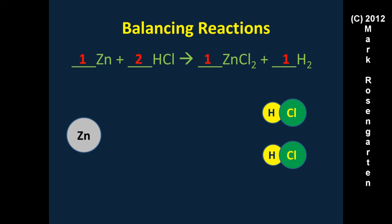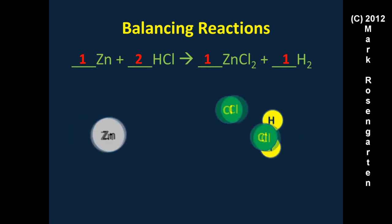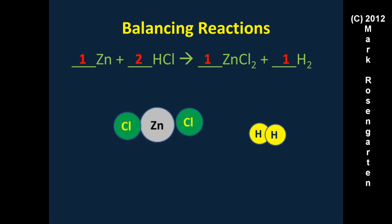Visually: one zinc and two HCls react, the bonds break, the atoms rearrange, and we get one zinc chloride and one diatomic hydrogen.